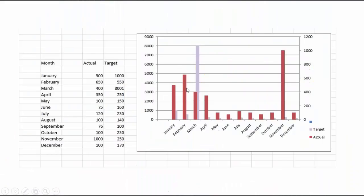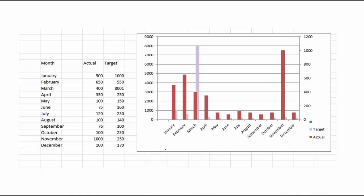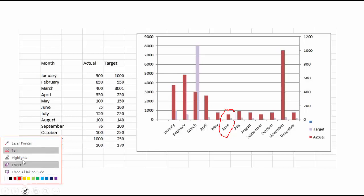Let me go to the second slide where I have a chart. I want to highlight something during my meeting or presentation. As you can see, in the month of June the actual value was very low, which I want to highlight. For that I can use the pen option. I have different tools available: laser pointer, pen, and highlighter. Let me take the pen and highlight simply here.